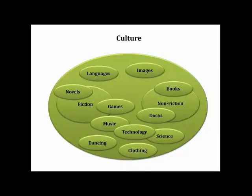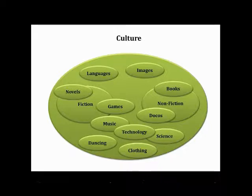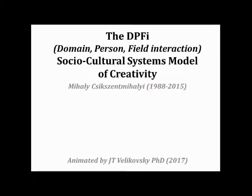You have domains in culture — lots and lots of them, these are very few of them — and people keep making up new domains in culture by combining two old things to get a new thing. We just talked about movies, but that's how it can work. So that was the Domain, Person, Field, Interaction Sociocultural Systems Model of Creativity by Mihaly Csikszentmihalyi, from 1988 to 2015.